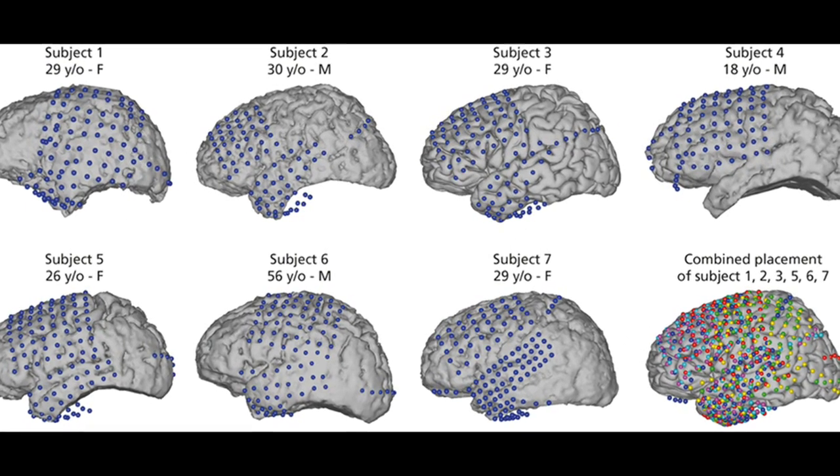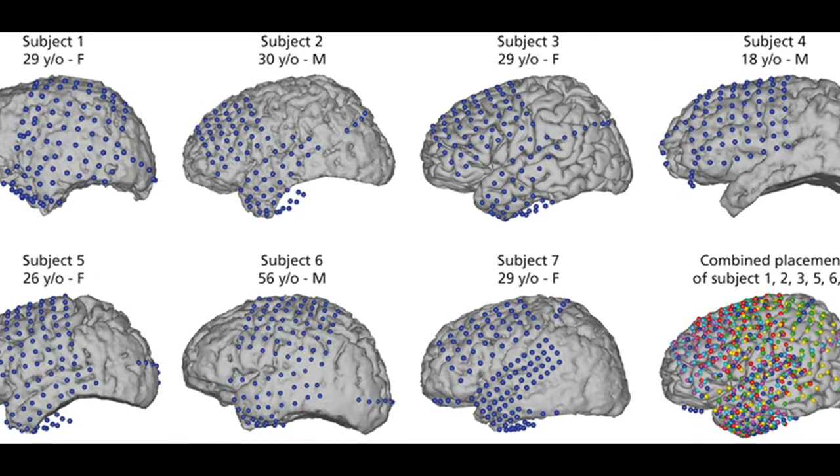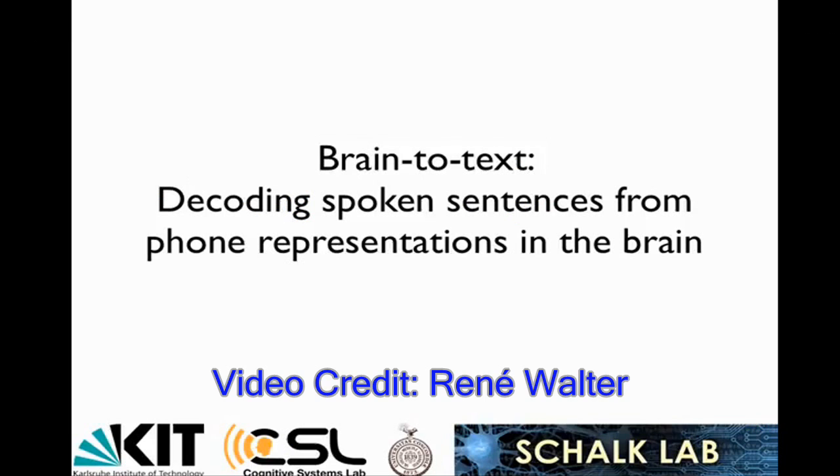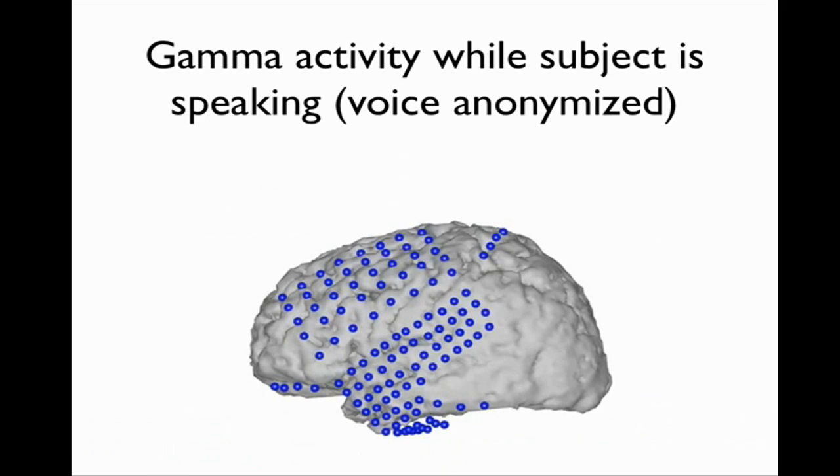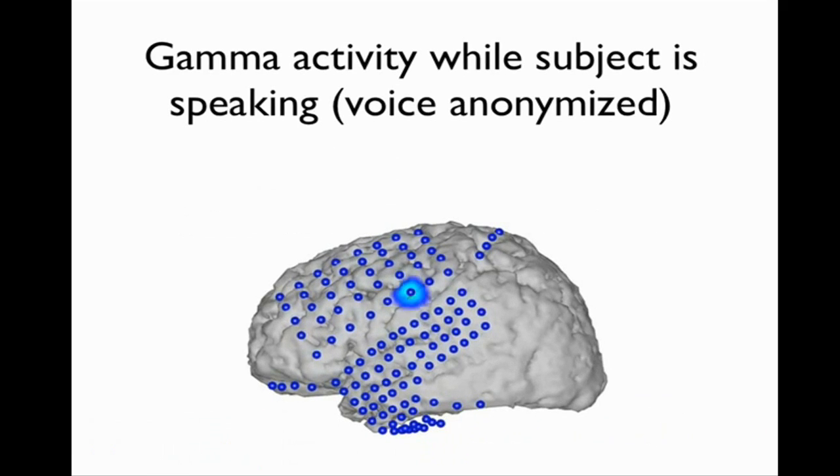This brain-to-text interface was tested with many volunteers. As subjects read pre-selected texts aloud, implanted electrodes recorded brain activity to an electrocorticogram.